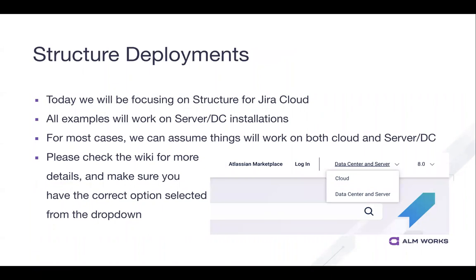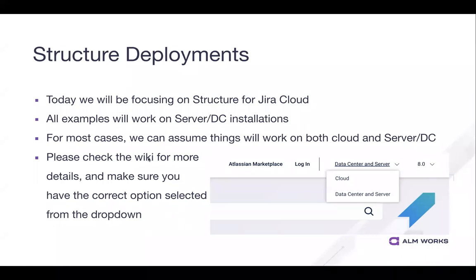We have different deployments. Today we're focusing on Structure for Jira Cloud, but all examples should work on Server and Data Center. The looks are a little different, but the functions are functionally the same. One warning: if you are on cloud and using the wiki, the default documentation is for Data Center and Server. So click that dropdown and switch yourself to Cloud to make sure you're looking at the right documentation.